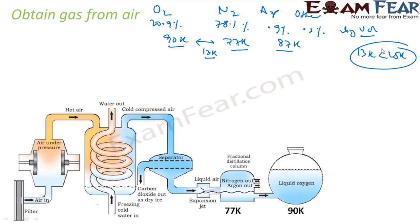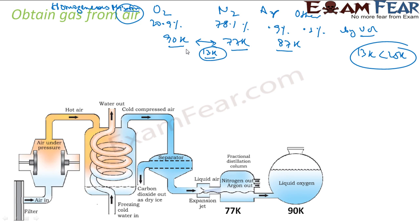We know there is a difference in boiling point, and air is a homogeneous mixture of oxygen, nitrogen, argon, and other gases. These components have different boiling points, and since the difference is less than 13 degrees Celsius, we can separate them by fractional distillation.